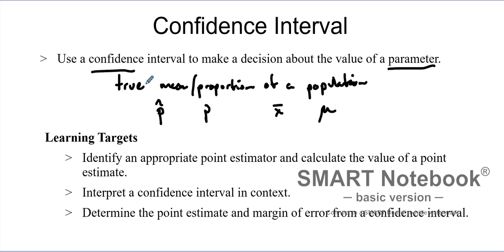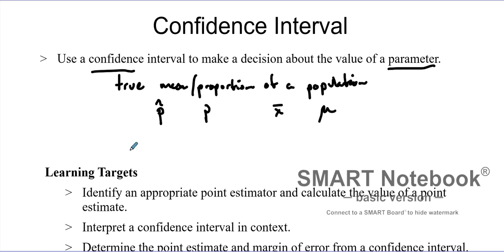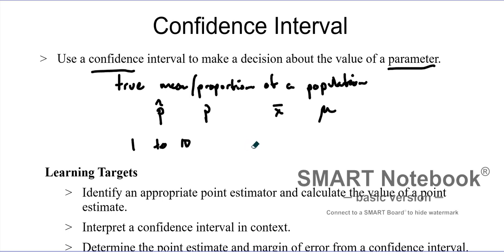We're looking for confidence — sometimes you hear 90% confident or 100% confident. How can you be 100% confident in anything? For example, if I pick a number from 1 to 10 and you guess nine, how confident are you? If you give a range of values, your confidence depends on how wide that range is. With just one guess, you have a 1 out of 10 chance — that's 10% confidence.